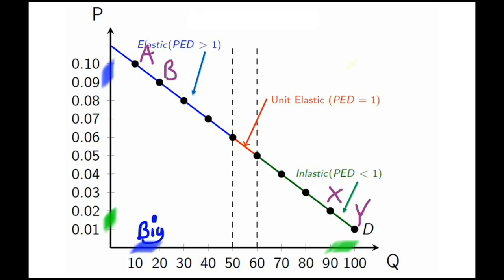What you find is that you have a big change in quantity and a small change in price when you put them in percentage terms. If we go back and do that for points x and y, you can see that the percentage change in price is big, and the percentage change in quantity is small.